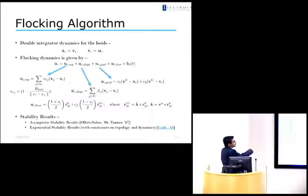So this is the flocking algorithm or the model that we'll be using throughout. So for this kind of a model, there are some stability results already present. The more popular ones are by Olfati-Saber, and that came out in 2006, and one by Tanner that came out in 2007. We extended some of these results to give exponential stability. They're not included in this talk, but they can be seen in our paper.